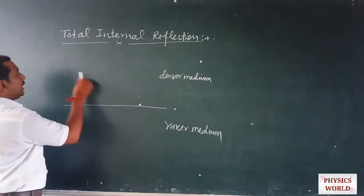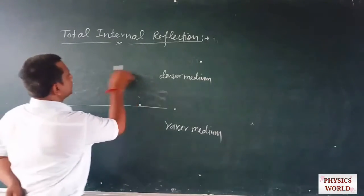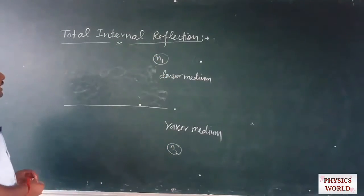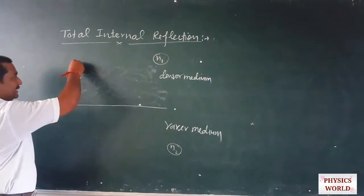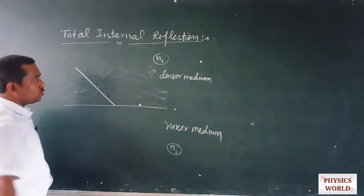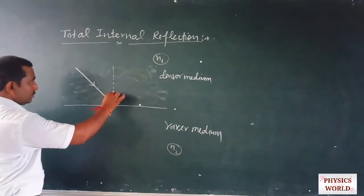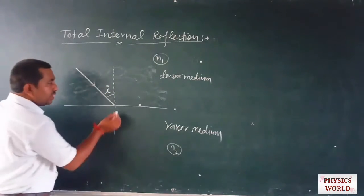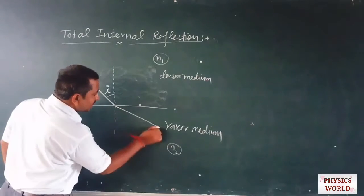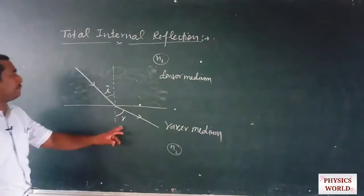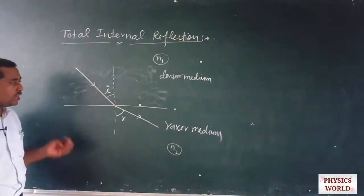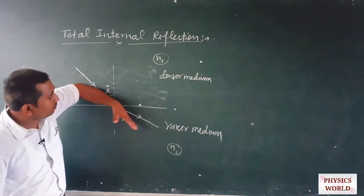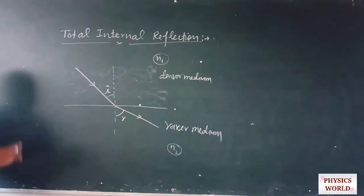Suppose we have a denser medium of refractive index n1 and a rarer medium of refractive index n2. When any light ray is incident on the interface of these two media, if we draw the normal at the point of incidence, we see that after refraction the light ray bends in a direction that makes a larger refracting angle compared to the incident angle.